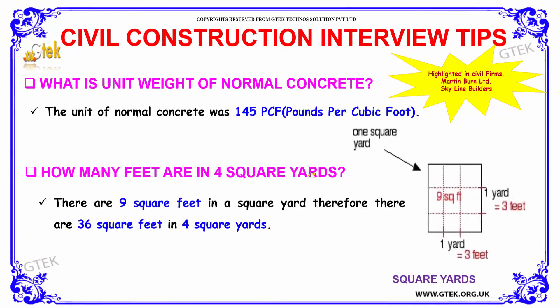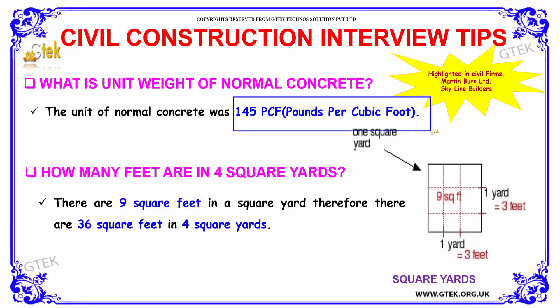What is the unit weight of normal concrete? The unit weight of normal concrete is 145 PCF (pounds per cubic foot).